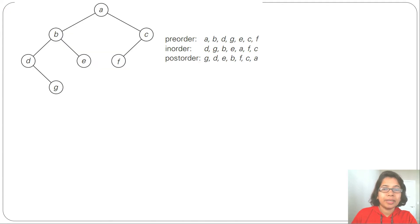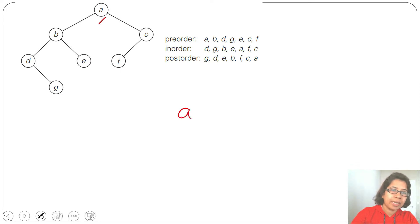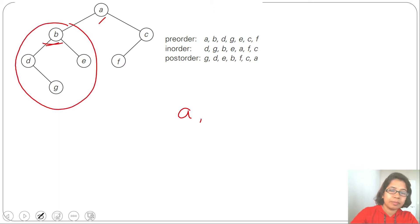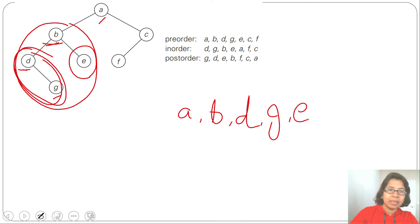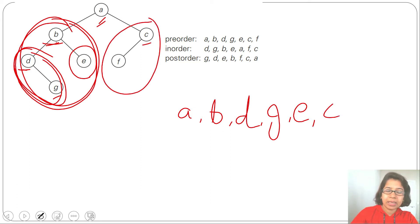Let's see an example of pre-order, in-order, and post-order traversal. Pre-order is root, left, right. First we visit root A, then its left subtree — root B, then D. D has no left child, so we visit its right child G. Now the left part is done; next we visit right part E. Now the whole left part is done. Next we visit the right subtree — root C, then left child F. So pre-order traversal gives: A, B, D, G, E, C, F.